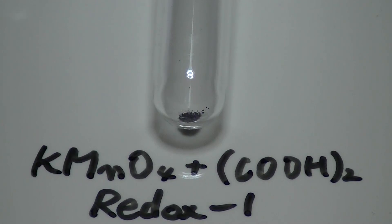Potassium permanganate and oxalic acid. Oxidation and reduction reaction. Potassium permanganate is oxidizer and oxalic acid is reducing agent.